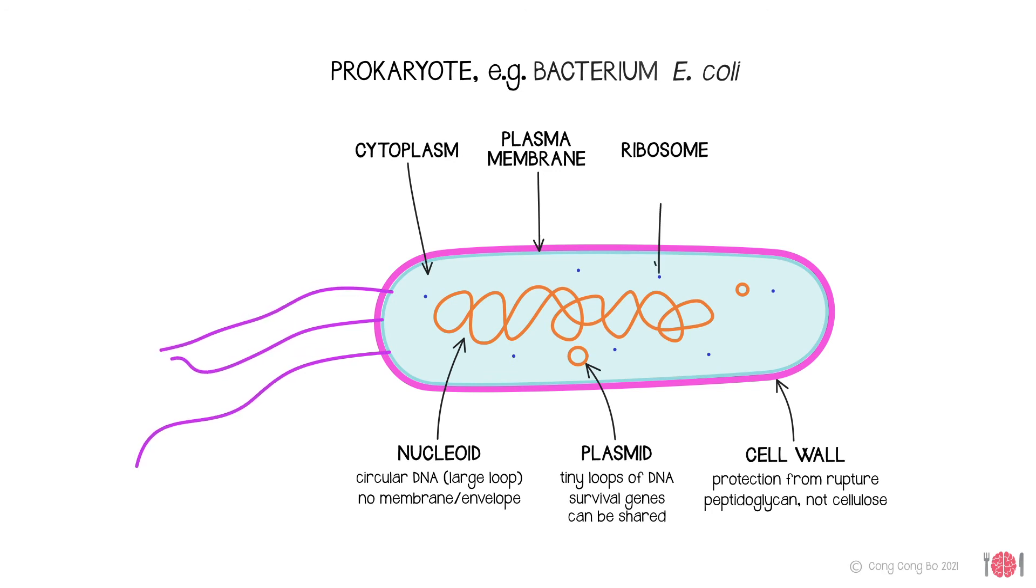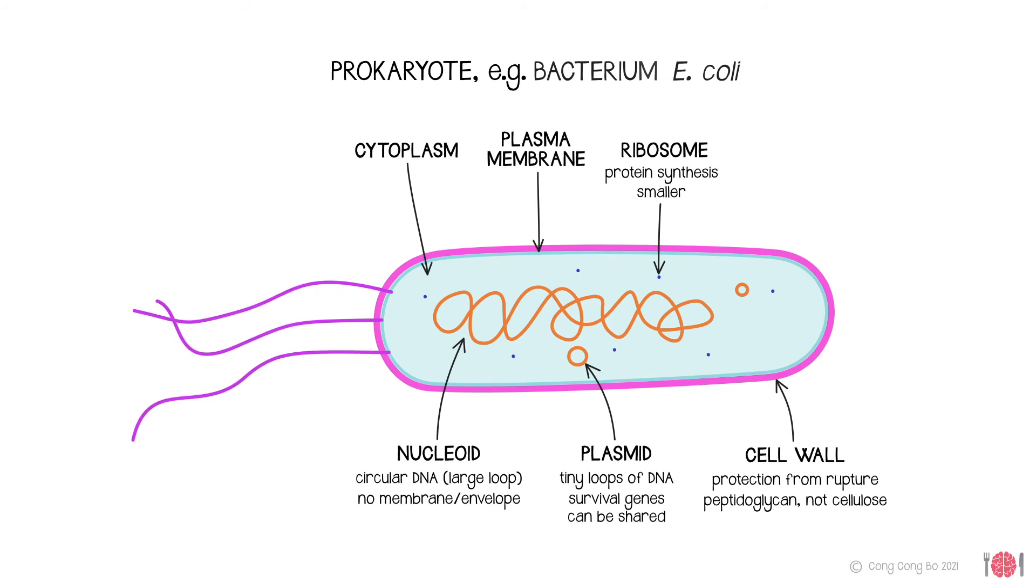Though bacteria have ribosomes since they also need to make proteins, their ribosomes are smaller. Finally, bacterial cells may need to move, and so have one or more tails, called flagella, which propel them around their environment.